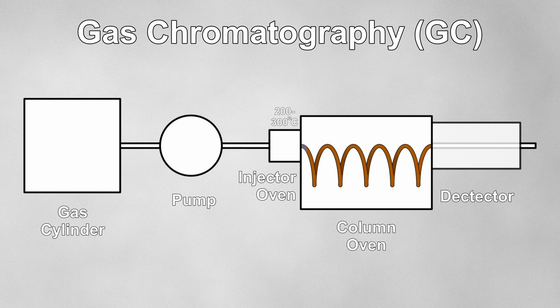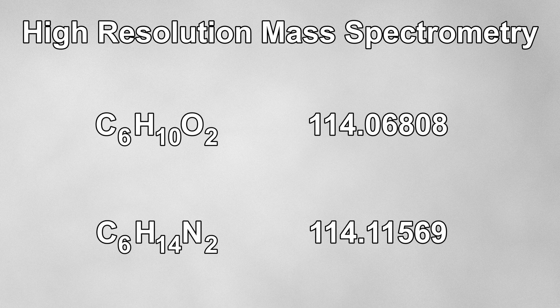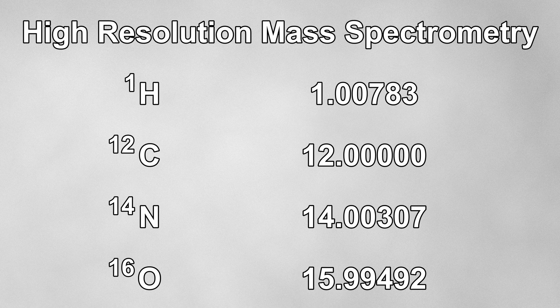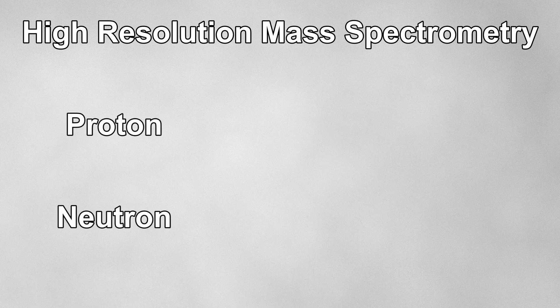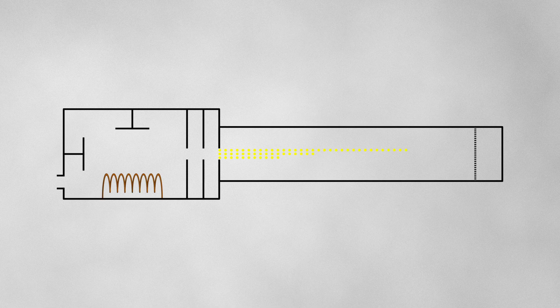Mass spectrometry is often used as the detector for gas chromatography in a technique called GCMS. Here, gas chromatography is used to separate out the components of a mixture, which are then fed one by one into the mass spectrometer so you can identify every component in the mixture. We can also get high resolution mass spectrometry, which shows extremely accurate values for masses to around five decimal places, helping to distinguish between molecules that have the same whole number mass. This is because different isotopes have non-integer mass numbers — except for carbon-12 by definition — since protons and neutrons have very slightly different masses to each other. Mass spectrometry is a fantastic technique that gives a huge amount of information about the mass and structure of whatever we're analysing.